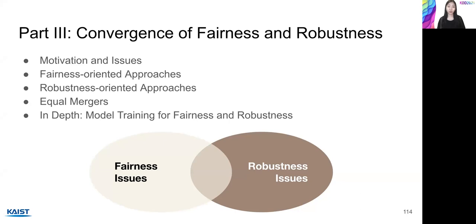Thanks for coming to the last part of the tutorial. I'm Yuzi from the Data Intelligence Lab at KAIST. So up to this point, our tutorial has covered important issues and representative papers in robustness and fairness. In this section, I will introduce a recently emerging research direction: the convergence of fairness and robustness for responsible AI. I will first describe the motivation and issues in this topic, then cover three research directions — fairness-oriented approaches, robustness-oriented approaches, and equal mergers — and finally introduce FRTrain, a new model training framework for achieving both fairness and robustness.